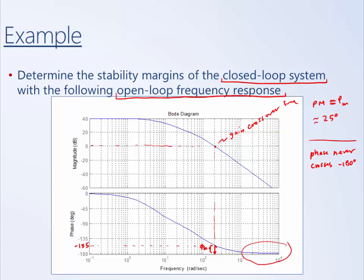What that means is, in essence, we can increase the gain as much as we want without the system going unstable. So we say that the gain margin is infinite, since the phase never crosses minus 180 degrees.